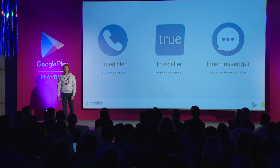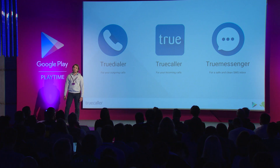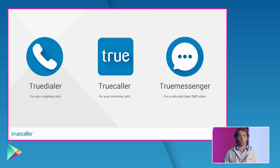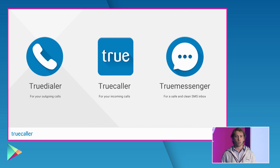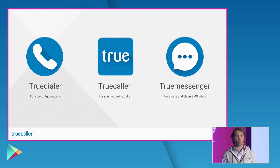TrueDialer is a phone application. It enriches your call history with pictures and names when they are missing and it also allows you to discover who you are going to call before performing the call itself in case the number is not in your phone book. And finally TrueMessenger is a messaging application that allows you to discover in real time who is sending you messages and it automatically blocks and filters spam so that your inbox is always safe and clean.